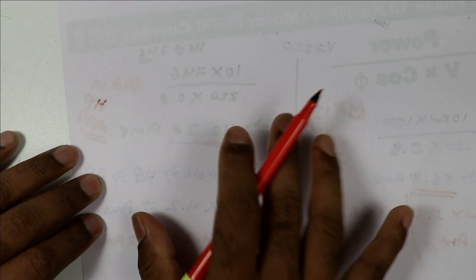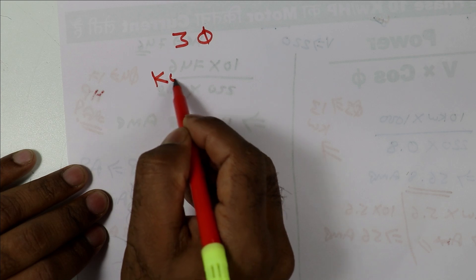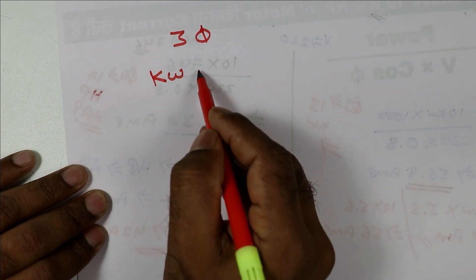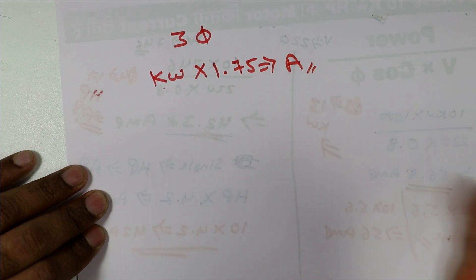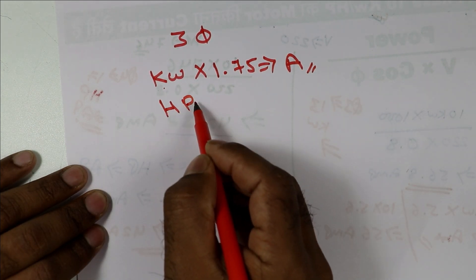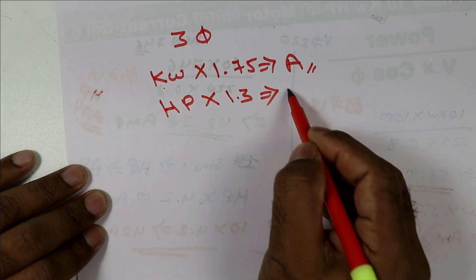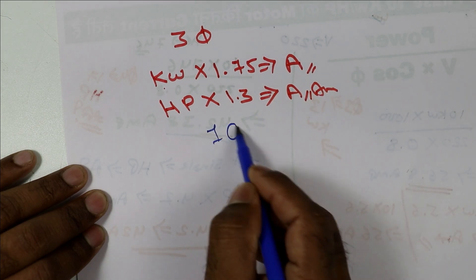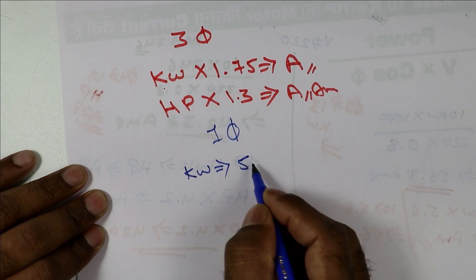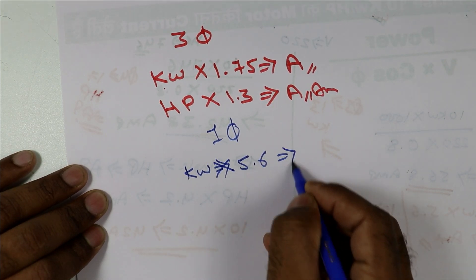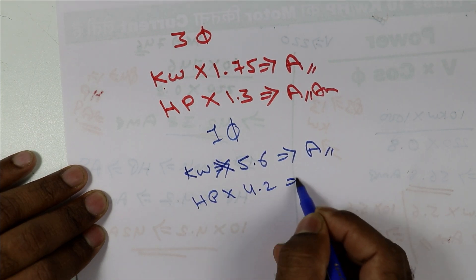Let us quickly recap all the short tricks. For a 3-phase motor with rating in kilowatt, multiply kW by 1.75. For a 3-phase motor in horsepower, multiply HP by 1.3. For a single-phase motor in kilowatt, multiply kW by 5.6. For a single-phase motor in horsepower, multiply HP by 4.2. Use these and you will get your answer in seconds.